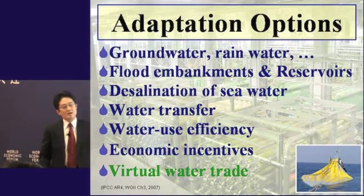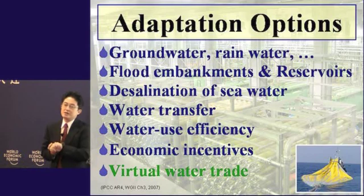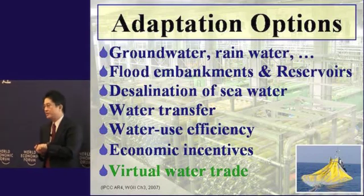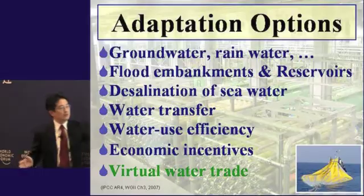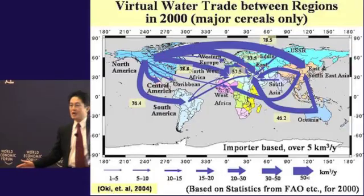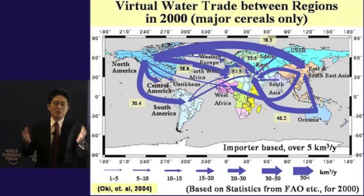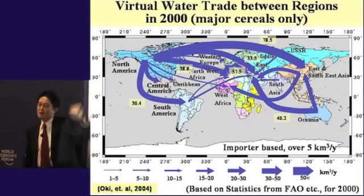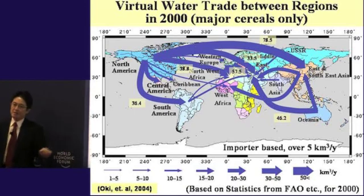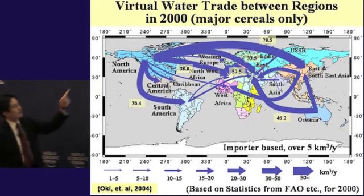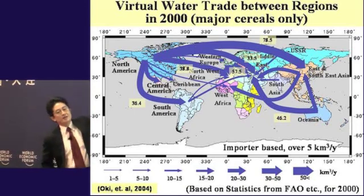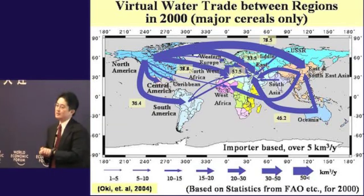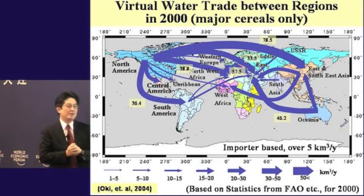As a result, the number of people living in a serious water shortage region will increase until the middle of this century. After that, it is highly dependent on what kind of society we build — whether the population becomes 15 billion or is reduced. There are adaptation options, and many technologies and political measures can reduce the water crisis.